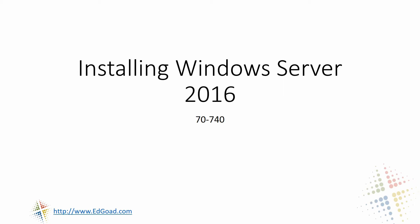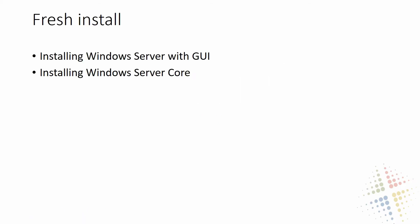In this section of 70-740 certification prep we are going to talk about installing Windows Server 2016. Installing Windows Server 2016 can be done in two different methods: the first is Windows Server with GUI, or graphical user interface — the interface you're used to in most desktop clients. The second option is Windows Server Core, which provides a command line interface. It's a smaller install base, a bit faster, and is sometimes preferred in some environments.